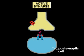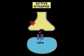The resulting ion flows depolarize the plasma membrane of the postsynaptic cell, thereby converting the neurotransmitter's chemical signal back into an electrical one that can be propagated as a new action potential.